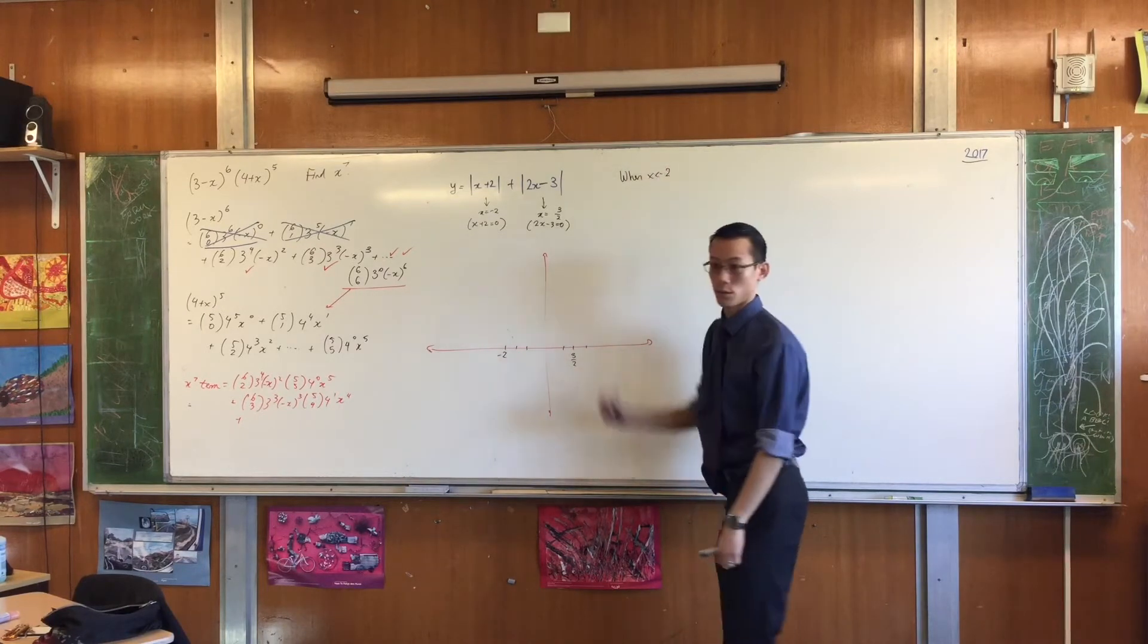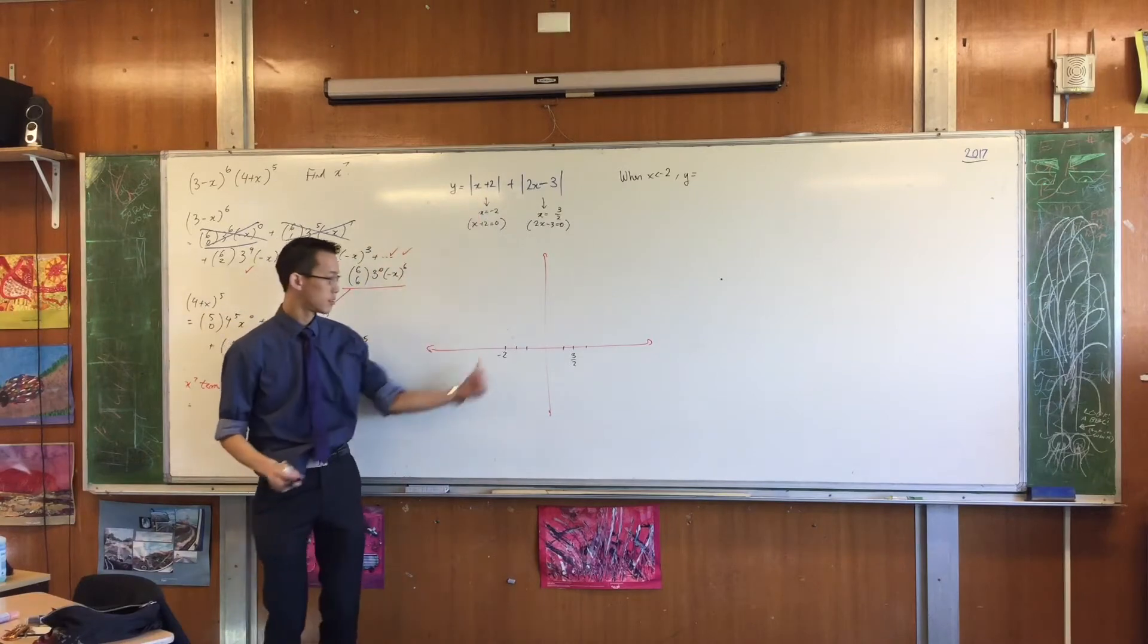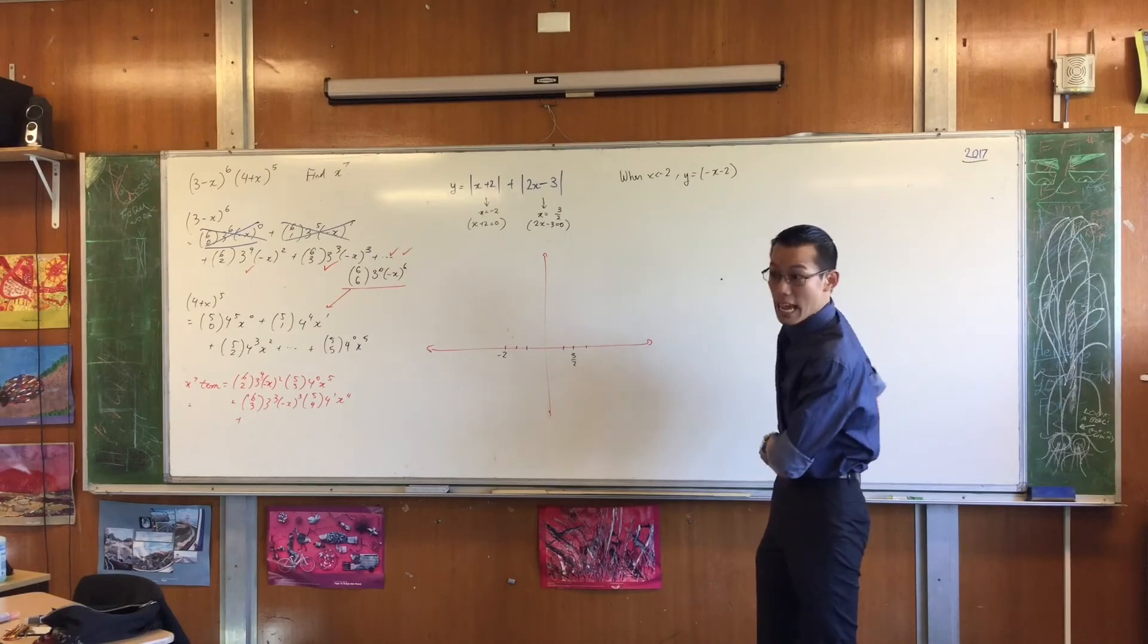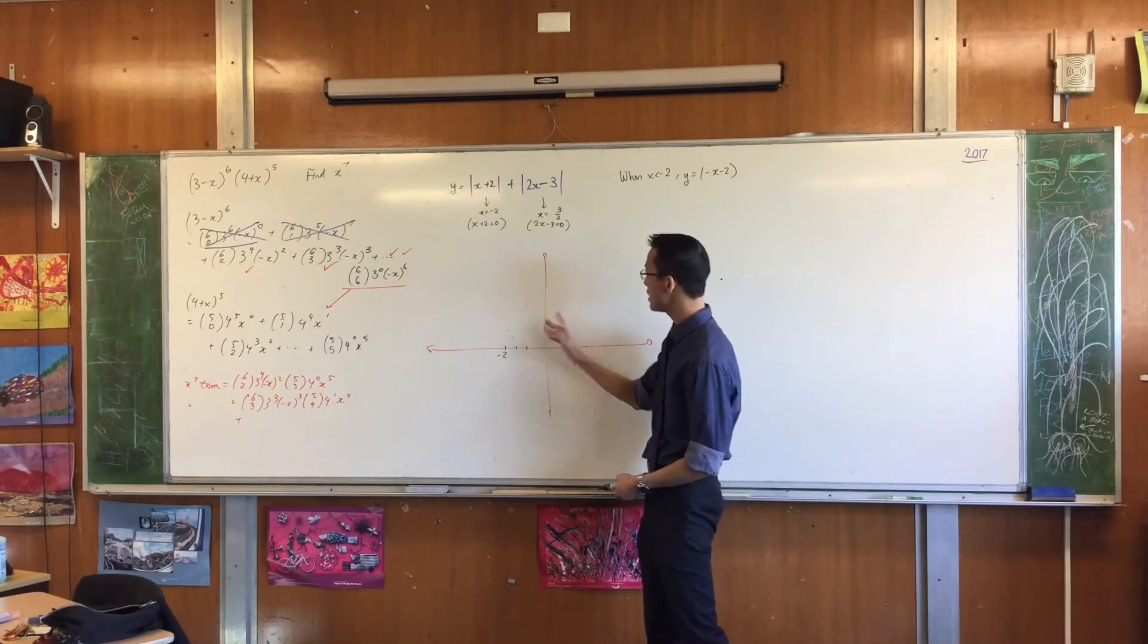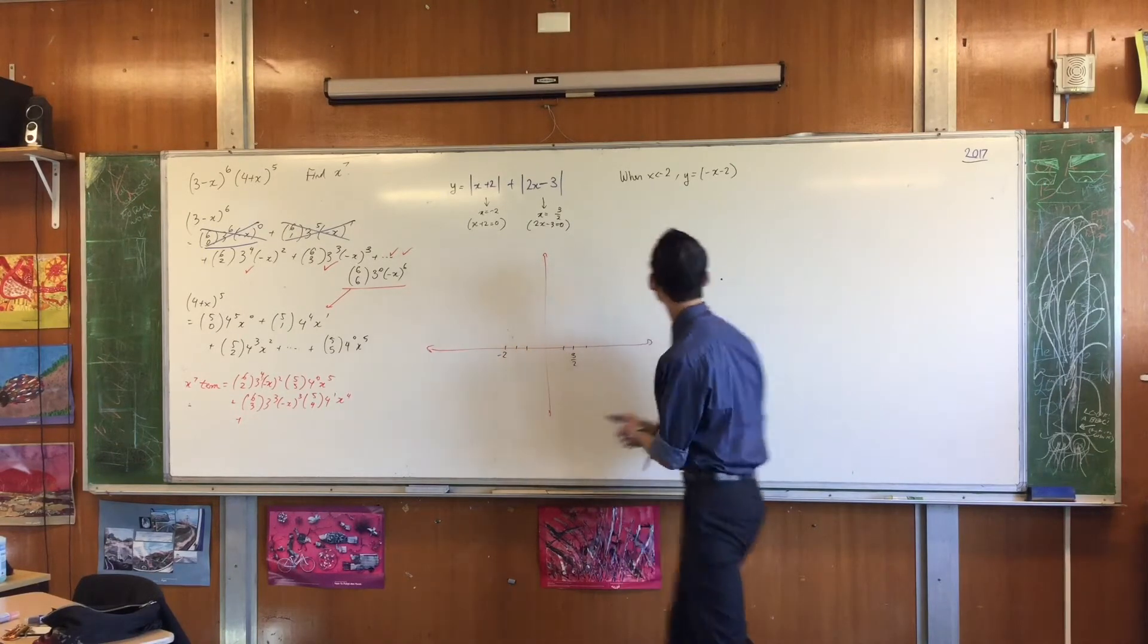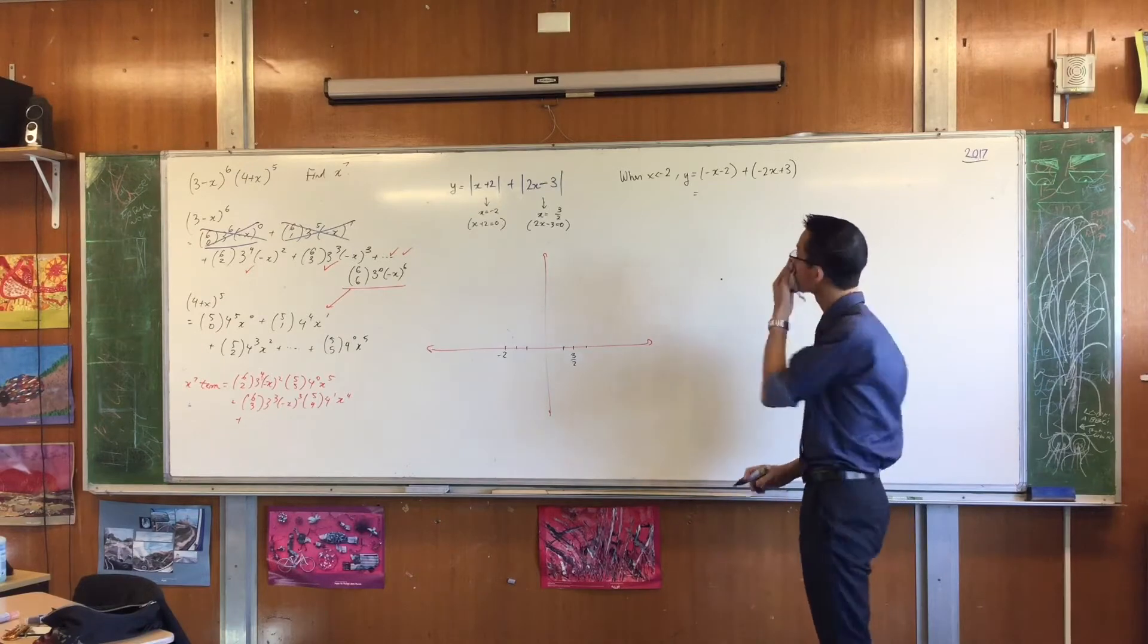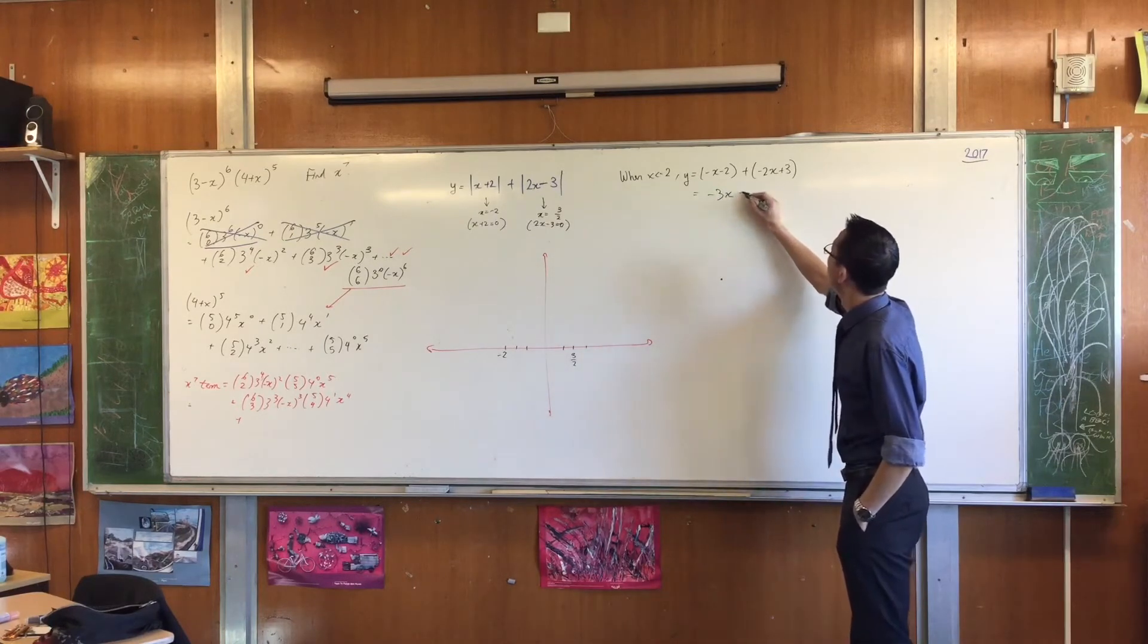When x is less than negative two, y is going to equal. Have a look at the absolute value pieces. What's this guy going to be equal to when x is on the left? The negative branch. Yeah, it'll be the negative version of itself, right? So that will be minus x minus two. In the same way, when you look at the second absolute value, what will it be equal to over here? He's going to be the negative branch, this whole area over here, to the left of one and a half, right? So therefore, the negative branch again, minus two x plus three. I'm going to just simplify. What do I get? Minus three x and then plus one.